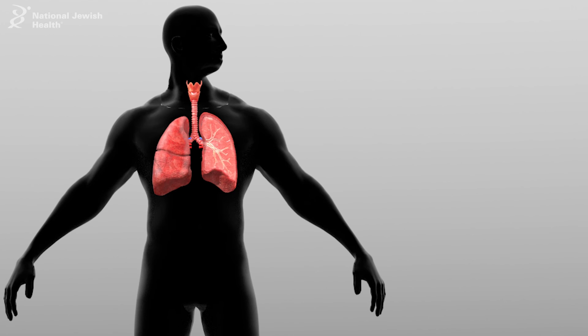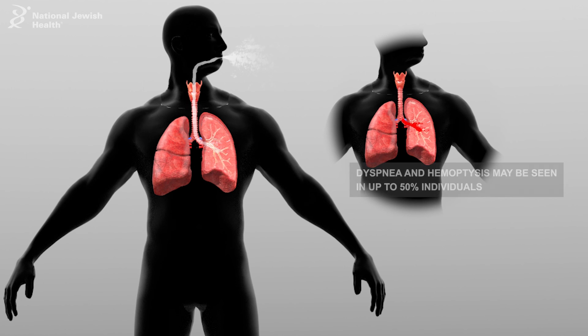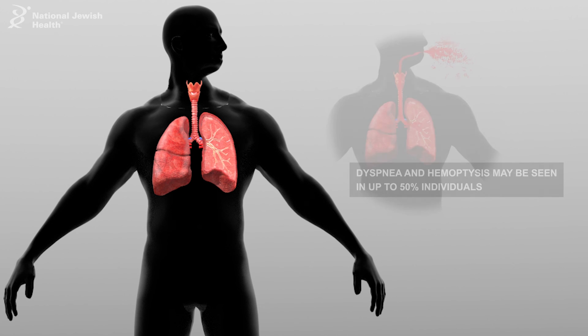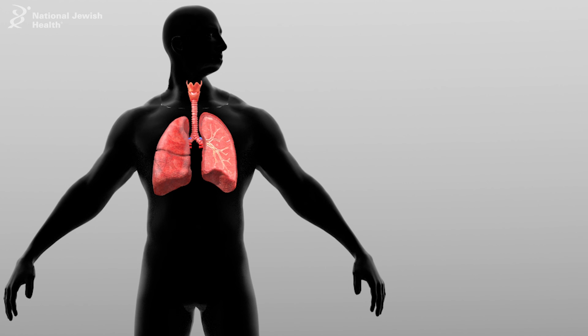The prominent clinical features of bronchiectasis include cough and sputum production. Dyspnea and hemoptysis may be seen in up to 50% of individuals, as well as pleuritic chest pain in a minority.